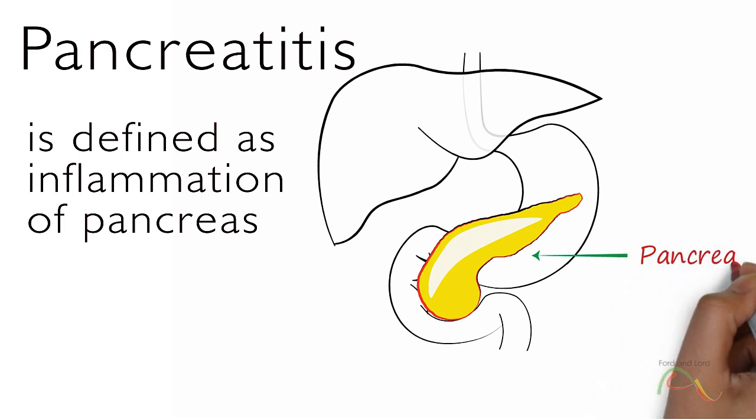Acute pancreatitis arises suddenly and may be very severe, although patients frequently recover from an acute onset. Chronic pancreatitis is a rather slow process.